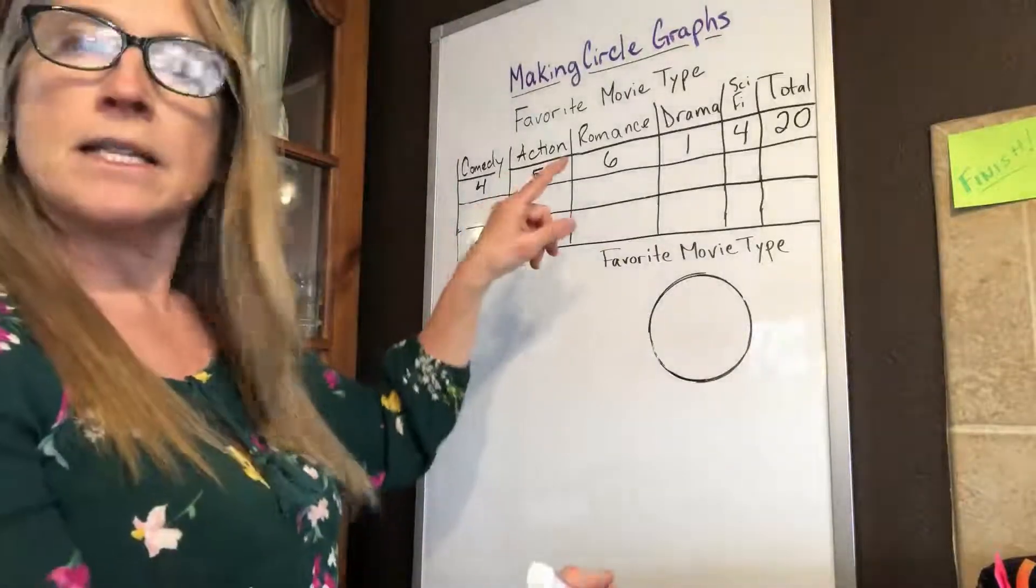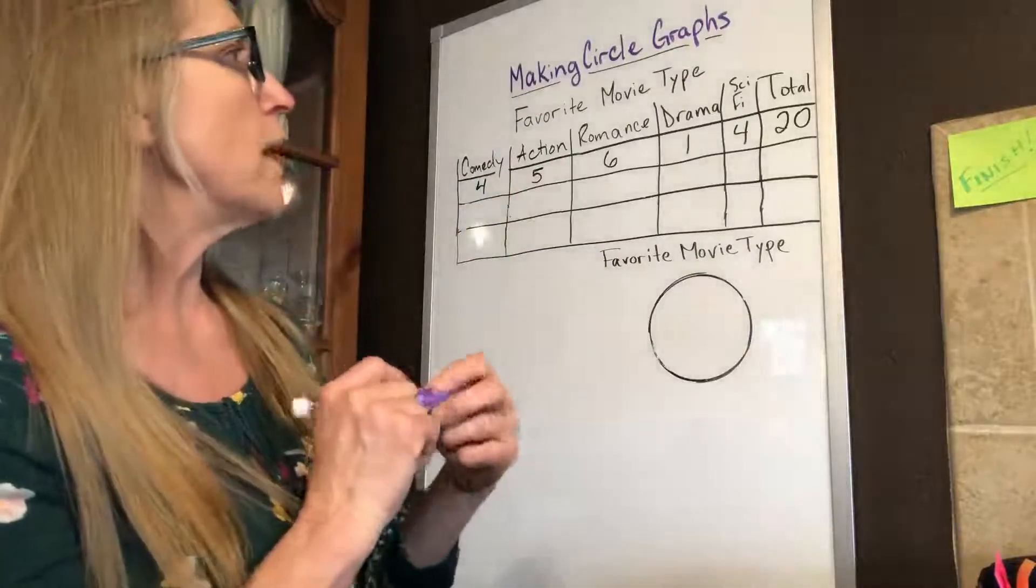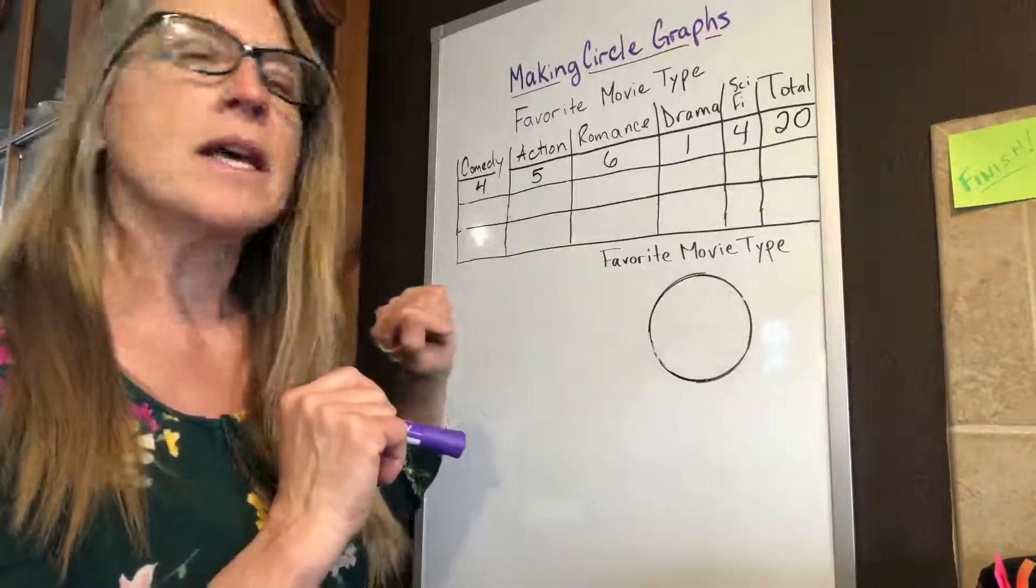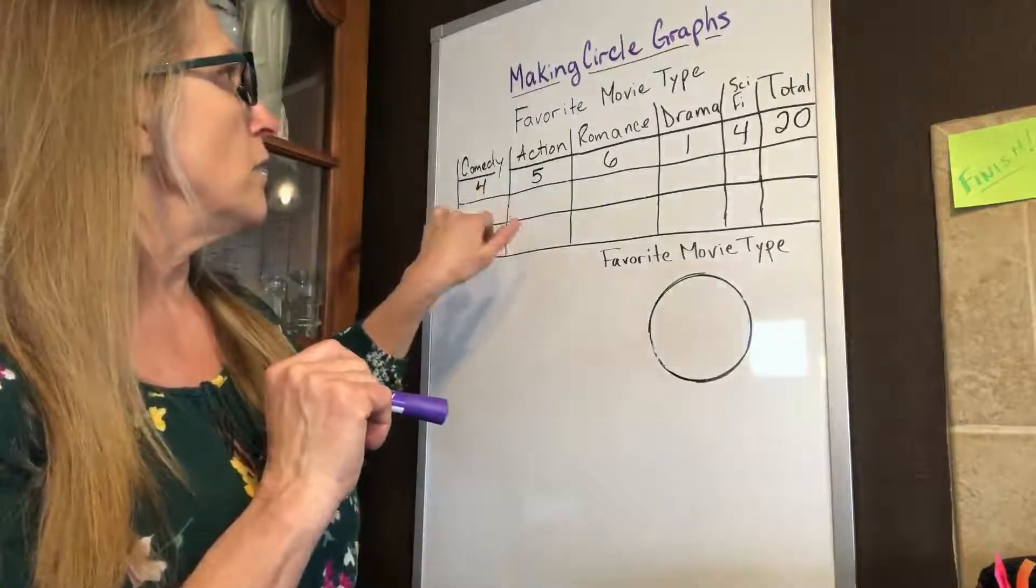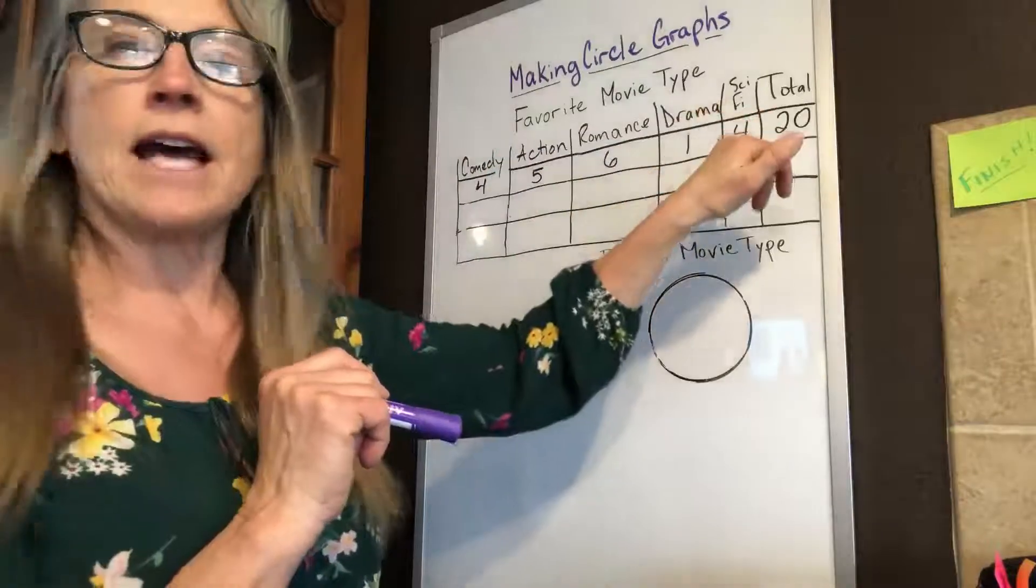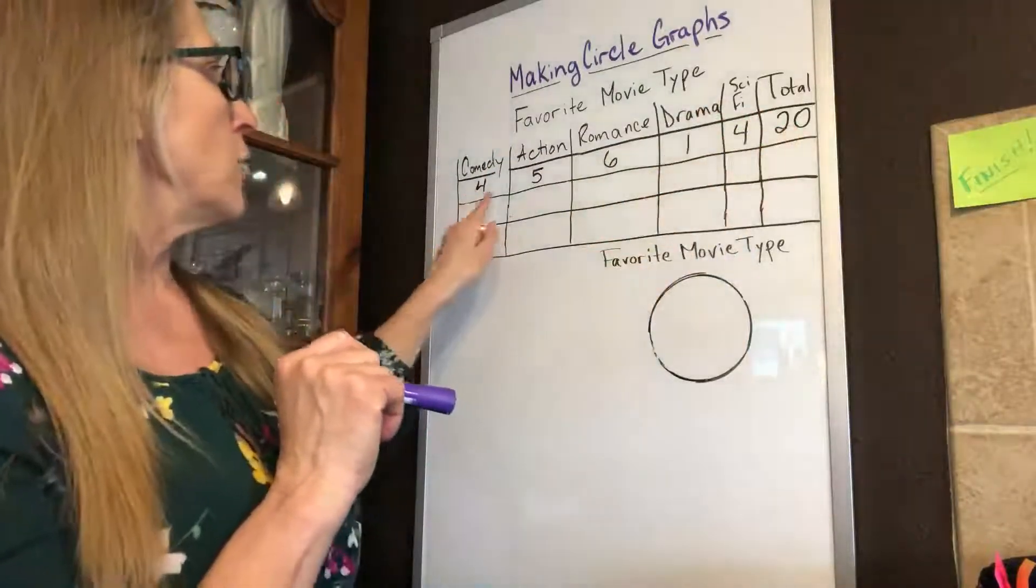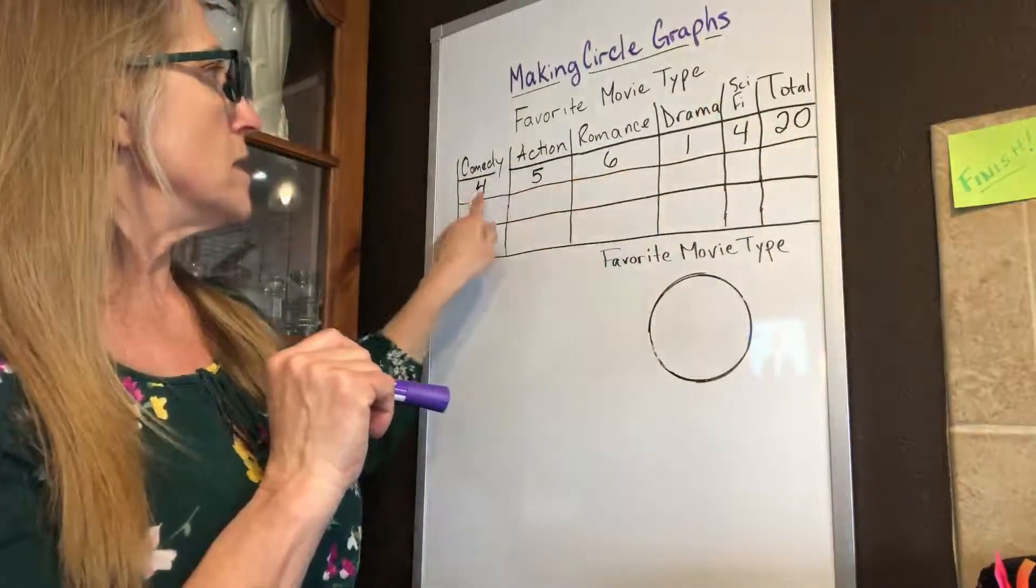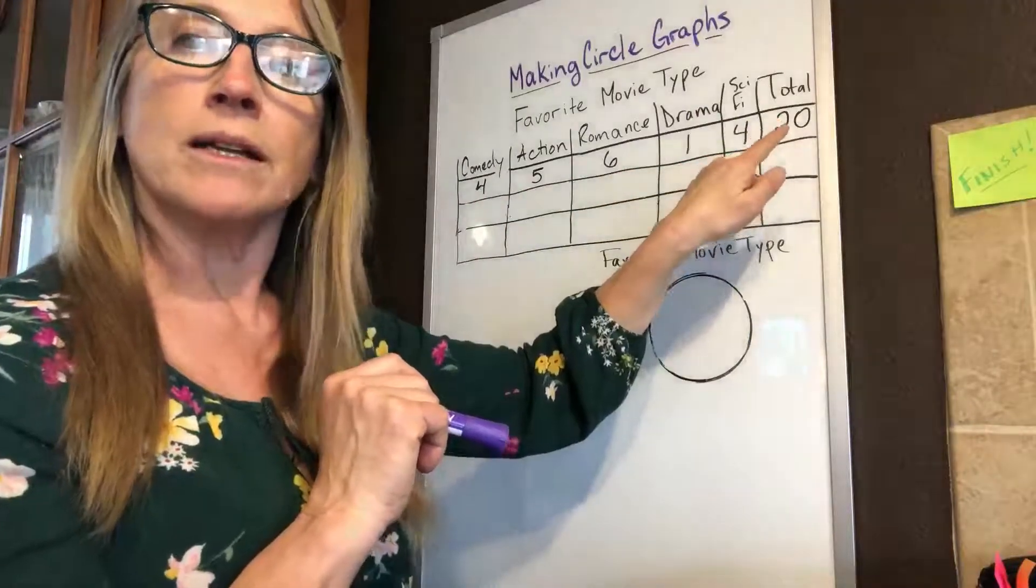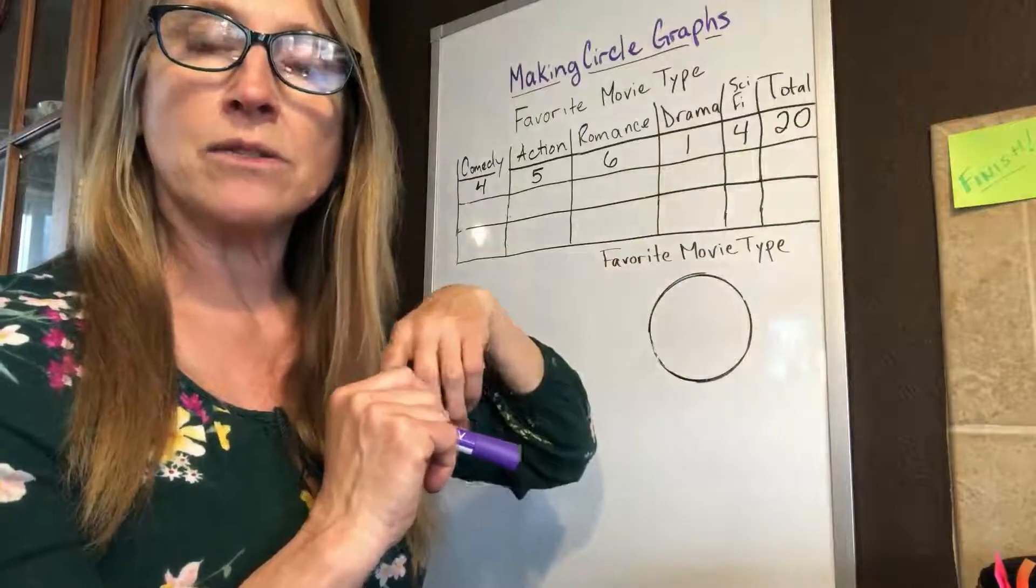This first example is favorite movie type. We have kids that have been asked what their favorite movie type was, and they fell into one of five categories: comedy, action, romance, drama, or sci-fi. We total up each of the responses, and they total 20 people in the survey, 20 students.